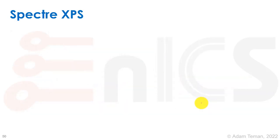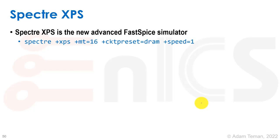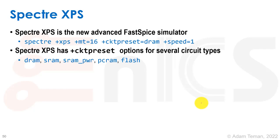Then we have Spectre XPS. Fast SPICE is a completely different type of framework that was also developed at Berkeley, which shows how you can really speed up SPICE by giving up on accuracy. XPS is basically Cadence's new Fast SPICE simulator, replacing the previous UltraSim. To use it, you do Spectre +XPS, and you can use +MT for multi-threading.